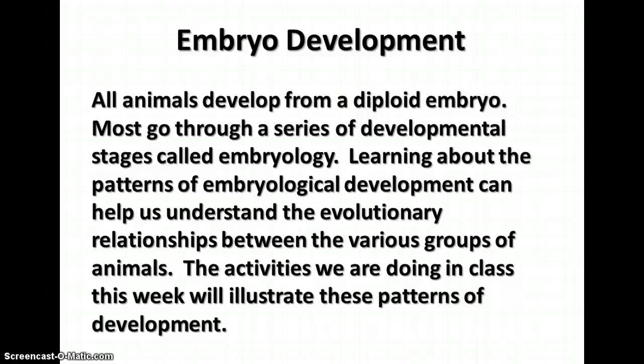All animals that are the result of sexual reproduction between two gametes develop from a diploid embryo. The embryo begins as a zygote, a one-cell stage caused by the fusion of the gametes. The zygote will then undergo a series of developmental stages that we call the embryology of the organism. We're learning about the patterns of development, which can help us understand the evolutionary relationships between the various groups of animals. We're doing a number of activities in class this week to help illustrate these patterns.